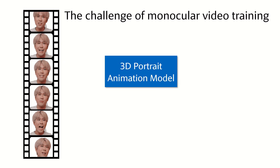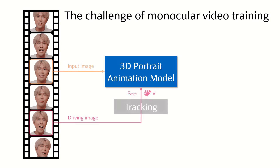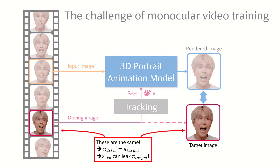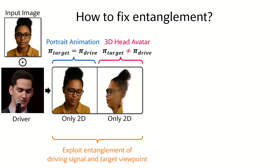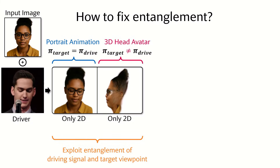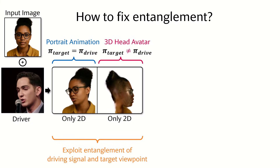To train a single-image 3D avatar pipeline, a large number of monocular portrait videos is typically used since not enough multi-view data is available. However, monocular training has a key problem: the driving image and the target image are the same. This allows the model to use the expression control signal to infer the target viewpoint, so the model can minimize the loss without learning a full 3D head. The result is an incomplete avatar that only looks good from the driving viewpoint. We call this behavior entanglement of the driving signal and target viewpoint.